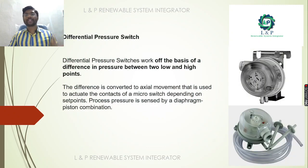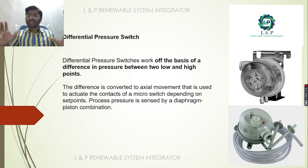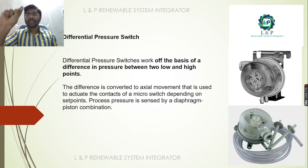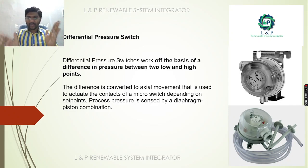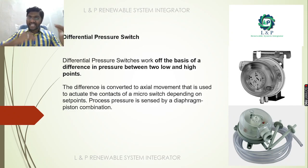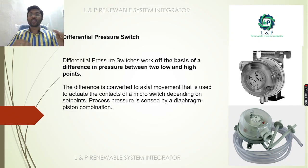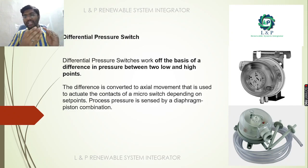A differential pressure switch works on the basis of the difference in pressure between two points. Normally, we create two points — one connected on the low pressure side and the other on the high pressure side — and we set a set point. If the pressure difference is greater than the set point, it acts as a switch. Normally it will be in the NC position, same like a relay. When the actual pressure exceeds the set point, the switch position changes from NC to NO, and the one already in NO changes to NC.